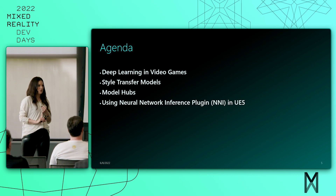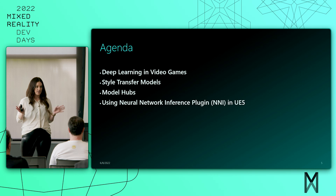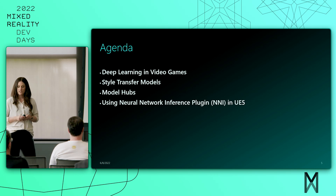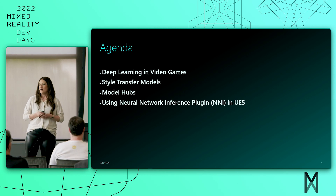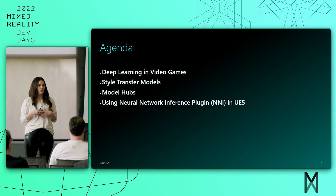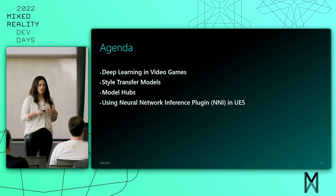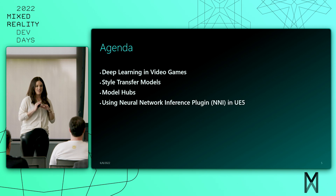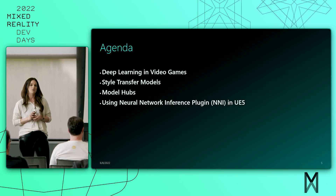We're going to talk about deep learning in video games — there are a lot of really exciting things happening there. Then we'll talk about style transfer models and how those are created. We'll also cover different model hubs. How many people have built an AI model or are familiar with model hubs where you can get pre-built models? A lot of times when you go to start building models, you think you have to start from scratch, but there's actually tons of open source stuff you can grab and use. We're going to be using the new experimental Neural Network Inference plugin released with Unreal Engine 5.